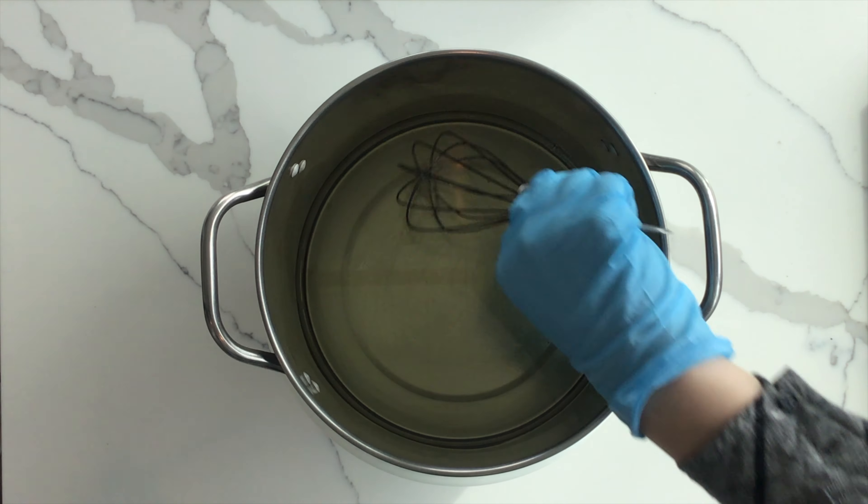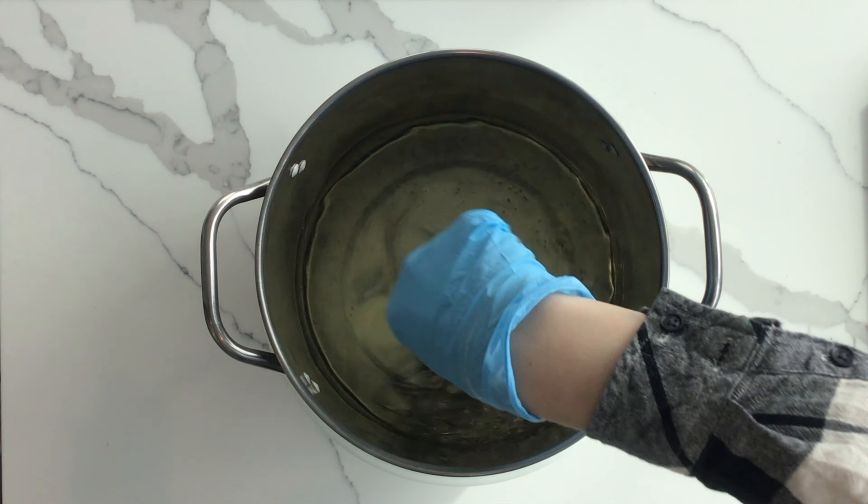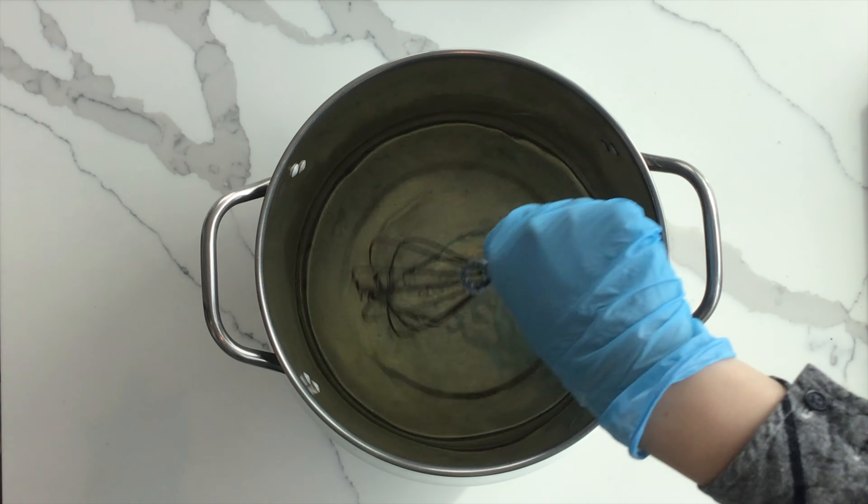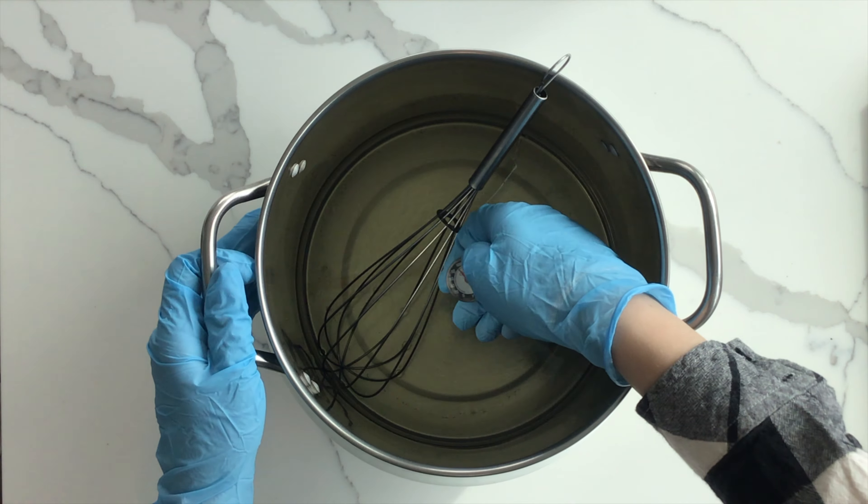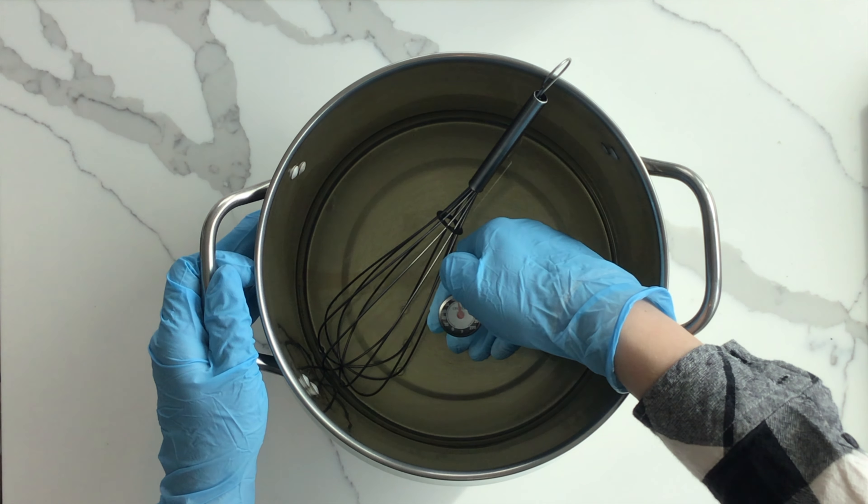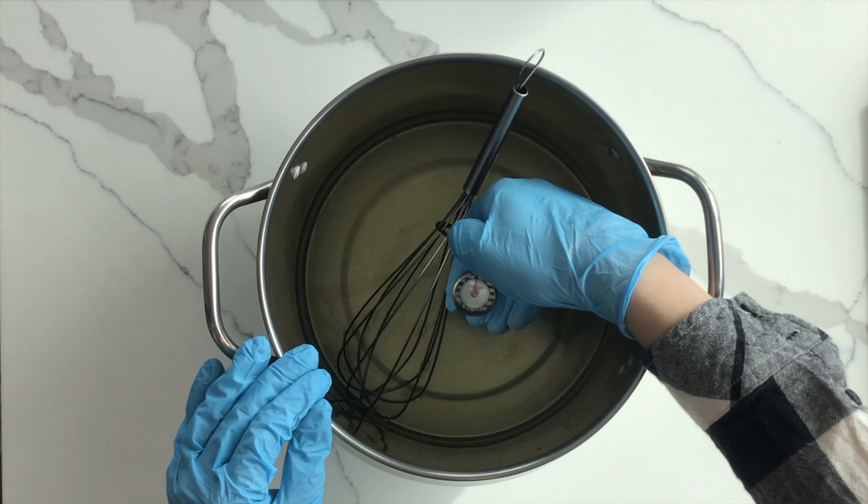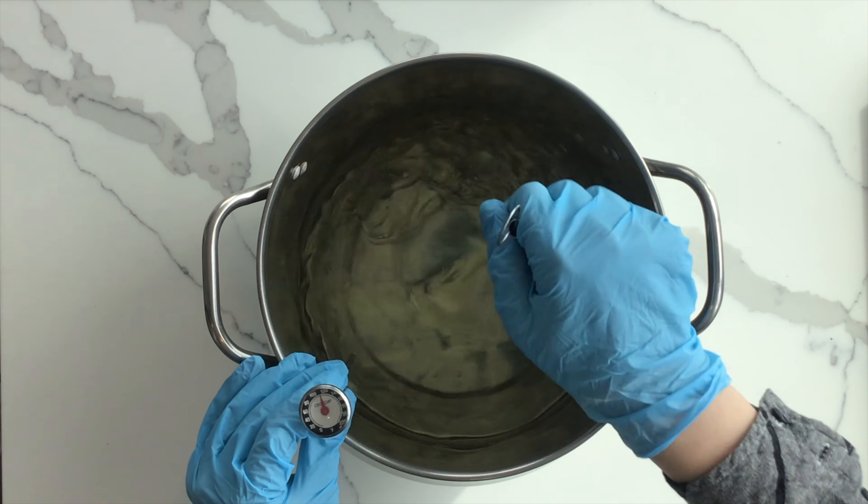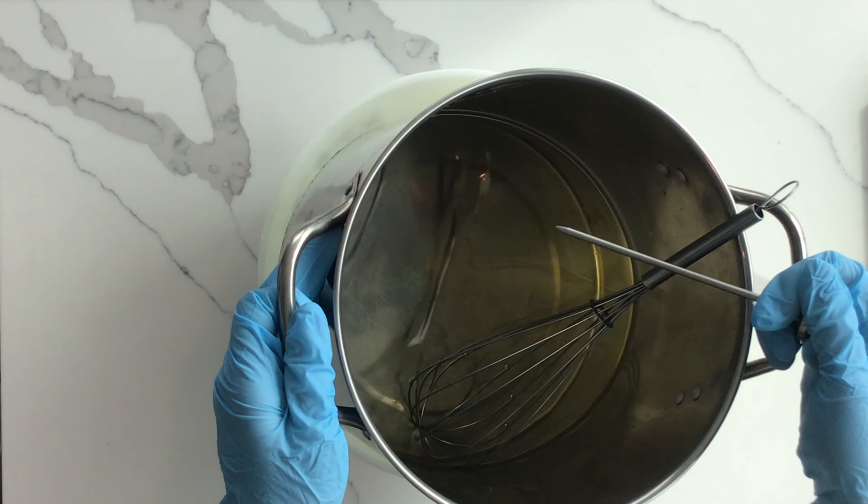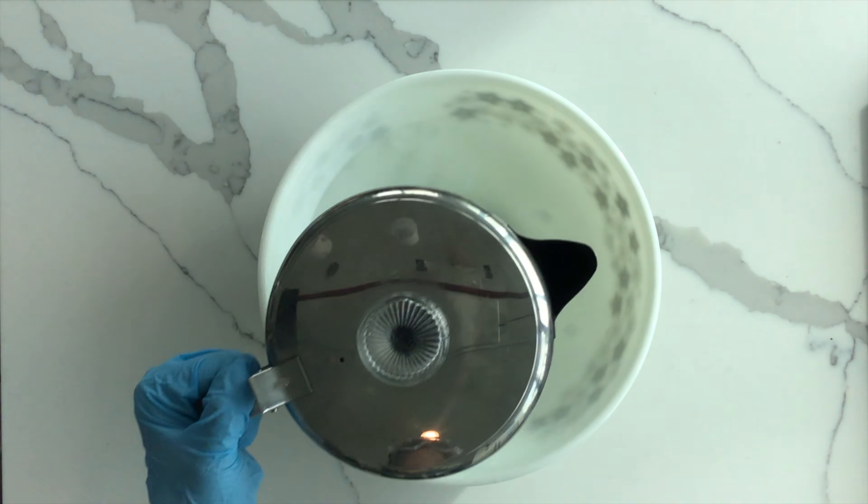Make sure to stir the oil and the lye to ensure that they cool evenly. This is especially important for the oil because the coconut oil can solidify and form a film on the bottom of the pot. This is harder to reincorporate back into the mixture, so stir it consistently and measure the temperature periodically.